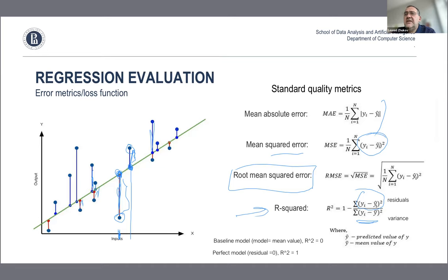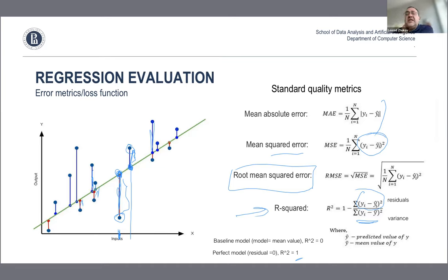R-squared is such that when you have a perfect model that fits the data perfectly, R-squared equals one. When you use a baseline model — just the average of all the data — R-squared equals zero. It's a relative metric: when absolute values aren't clear, R-squared lets people talk about values like 0.7, 0.8, 0.9 to decide whether to trust the model or not.